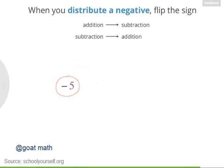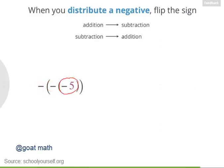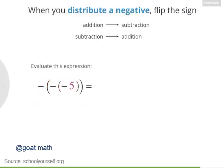For your final challenge, suppose you have negative 5, and then you take the negative of that, and then you take the negative of that. So you have negative, negative, negative 5. Can you simplify this expression?